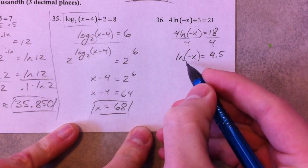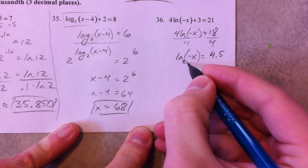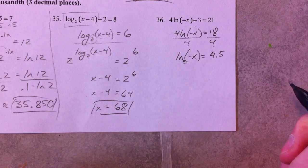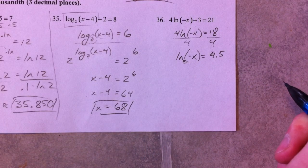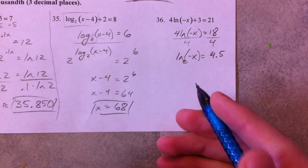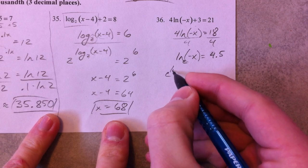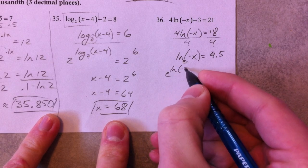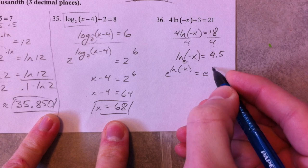Since it's a pretty decimal. Now you have to recognize that the base of the natural log is e. It's called the natural log because the base is e, the natural number. And now we're going to do the same thing here where both sides are going to become the exponents. E to the natural log of negative x equals e to the 4.5.